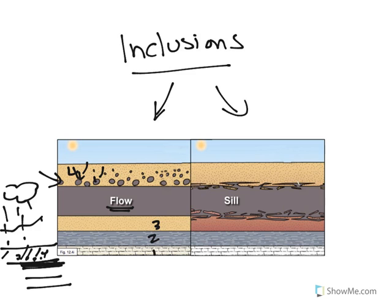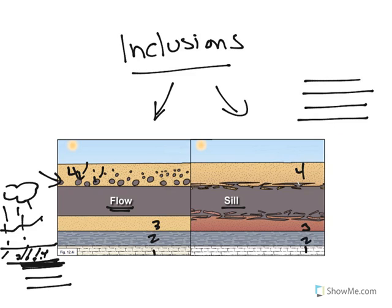Now let's look at the picture on the right. Here we have a sill. A sill forms differently — we again have rocks 1, 2, 3, and 4 that get deposited. Remember what a sill does: it comes and intrudes in between these layers, injecting itself in between them.